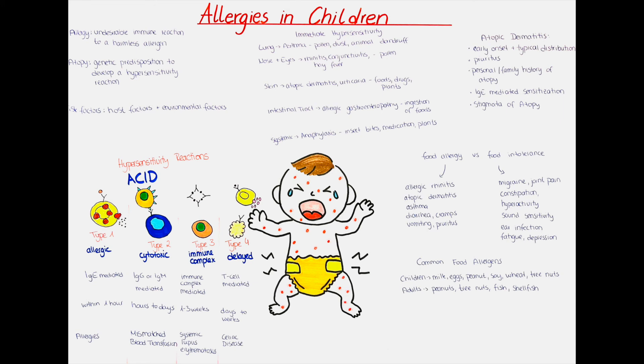Let's now talk about the treatment of anaphylaxis. How do we identify it? The letters A, B, C, D and E help us: airway, breathing, circulation, disability and exposure. Airway: can the patient talk? If the patient is able to talk, their airways are free and no further assessment of this step is usually necessary.